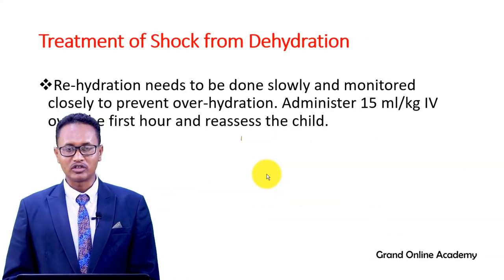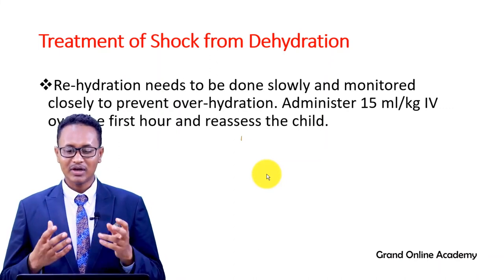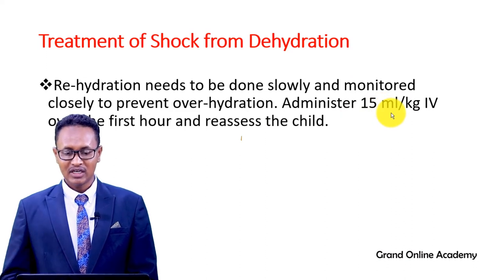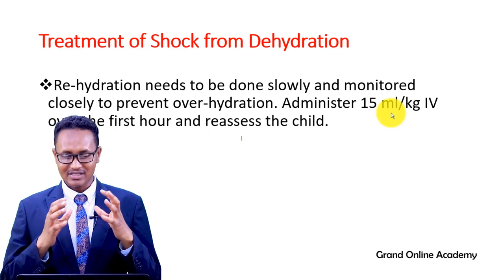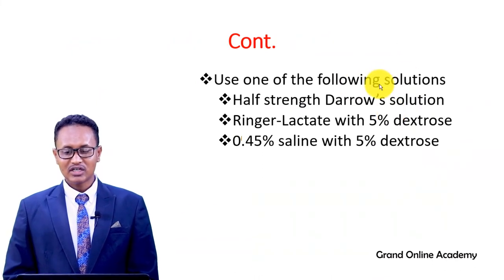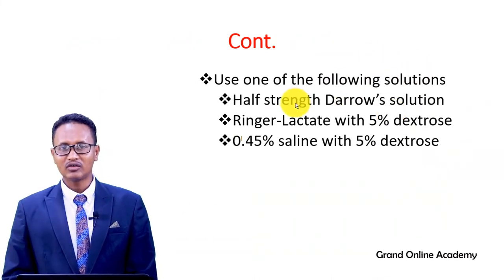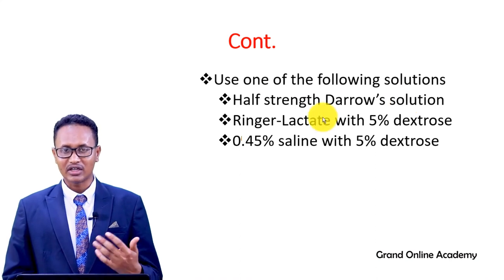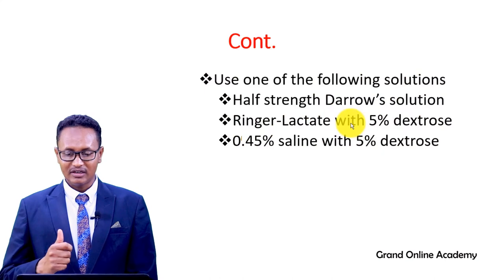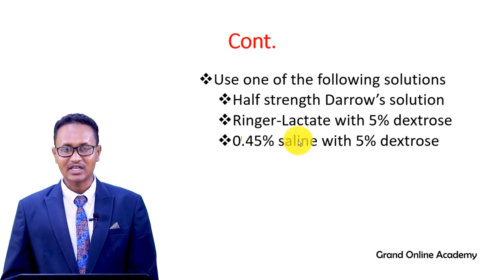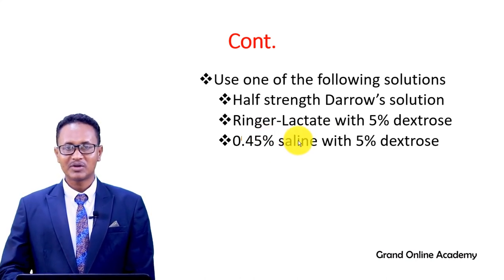In cases of shock, the first IV fluid to give is 15 mL per kg. You can use Ringer's Lactate with 5% dextrose, or half normal saline with 5% dextrose.